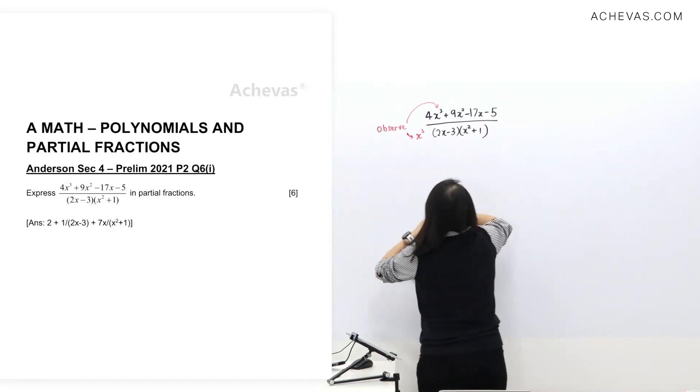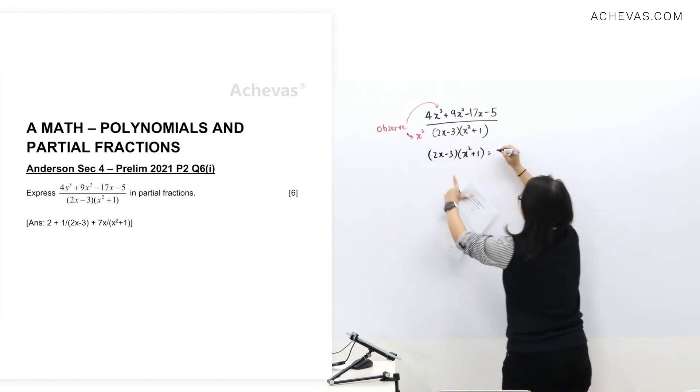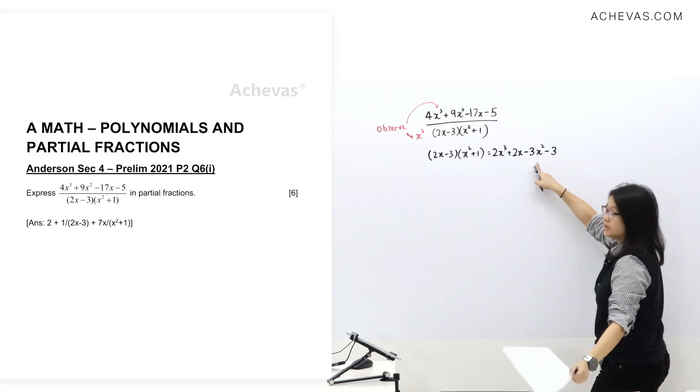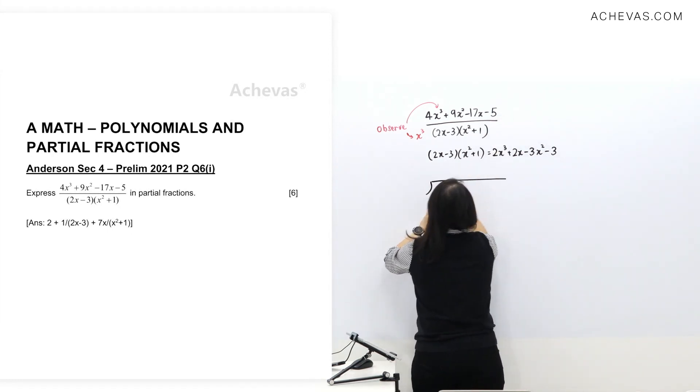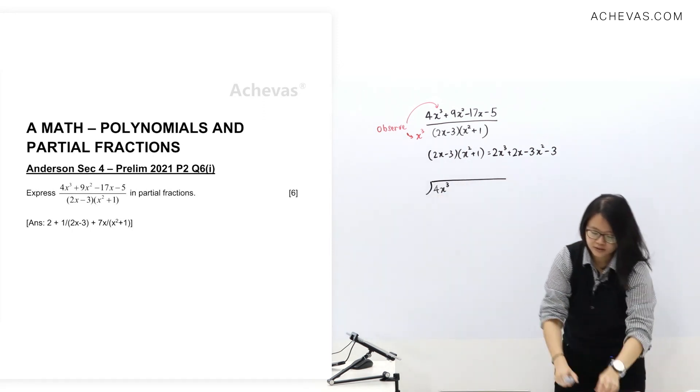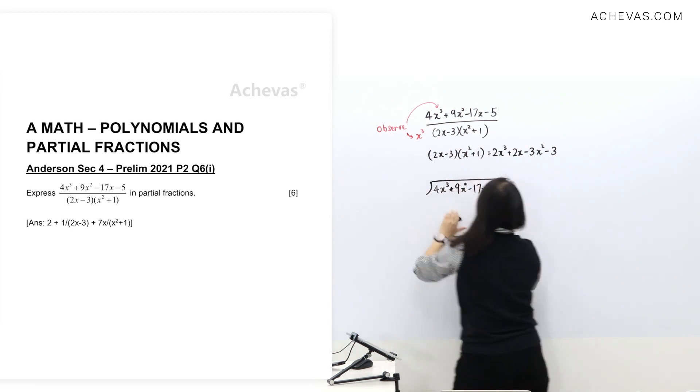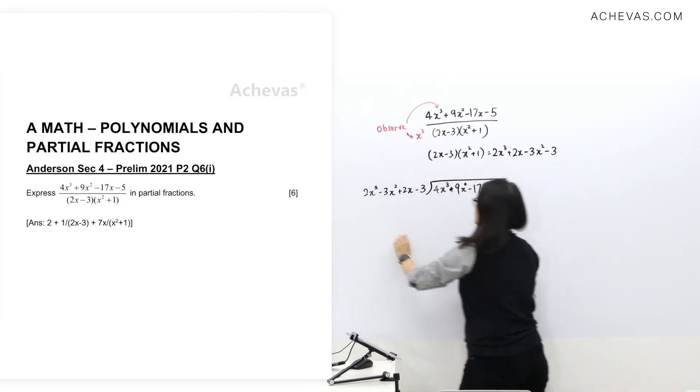I'm going to expand the denominator. Negative 3 with this 1, negative 3 with 1. I'm going to arrange this during long division to match the same order, which is in descending order of powers. Let's check the first term here.